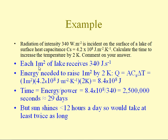Each square meter of lake receives 340 joules per second. The energy needed to raise 1 m² by 2 Kelvin is given by our formula for surface heat capacity: Q = AC_s ΔT = (1 m²)(4.2×10⁸ J·m⁻²·K⁻¹)(2K) = 8.4×10⁸ J.